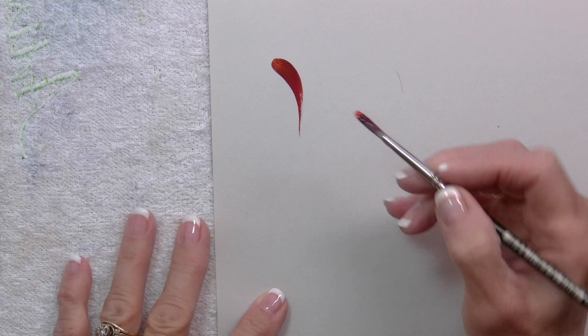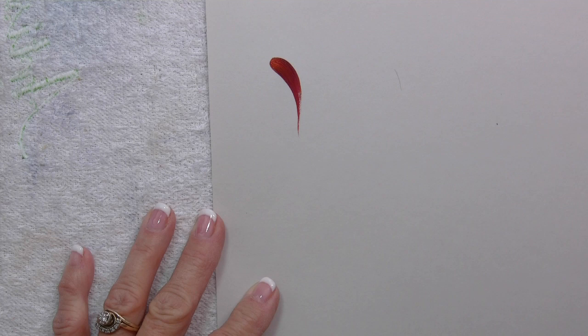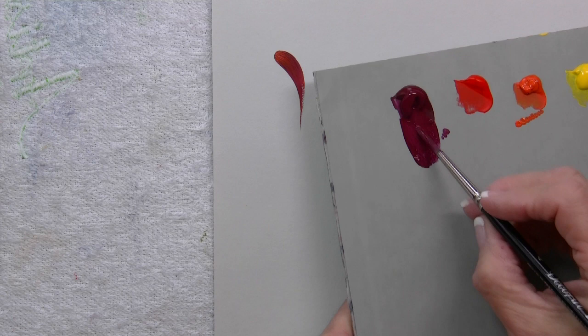Now if I want more orange to show, I'm going to not tap off quite so much. So I do reload every time and I'm going to load into the orange. I'm just going to tap a few times.